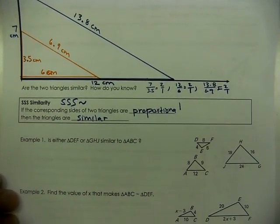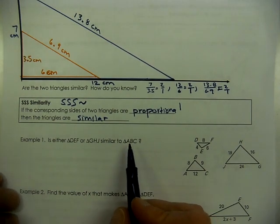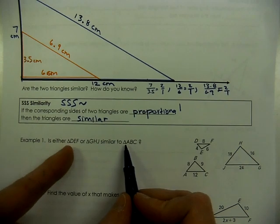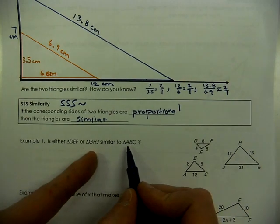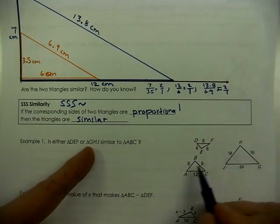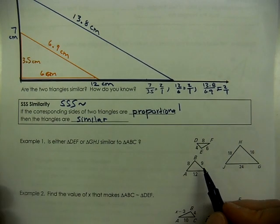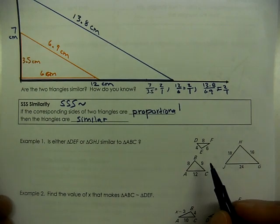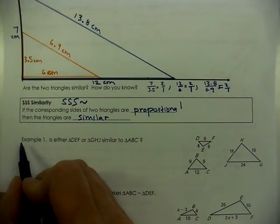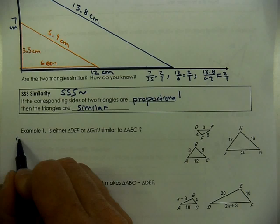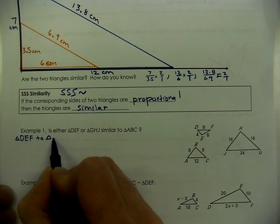In example one, we want to know which of these triangles is similar to triangle ABC. We're comparing triangle DEF to ABC, and also whether triangle GHJ is similar to ABC. To organize this, we have to compare corresponding sides since we don't have any angle information. I'll note that I'm comparing triangle DEF to triangle ABC first.